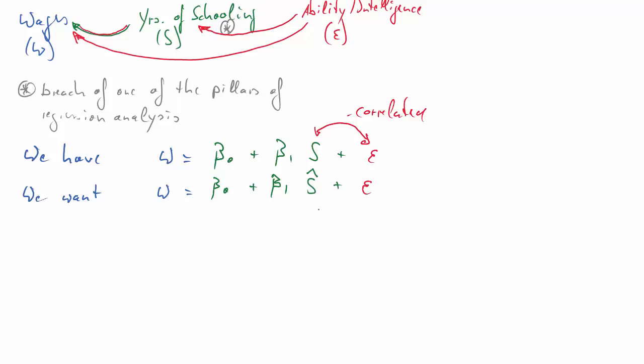What we want is really a model where we have a variable for schooling, S hat, let's call it that for the time being, that is uncorrelated with the error term. Because then we can use our sort of standard regression framework again. So we want an uncorrelated S hat, uncorrelated with the error term. That means uncorrelated with ability and intelligence. How can we get such a variable S hat from our variable S, the actually observations of years of schooling? What we need is what is called an instrument set.